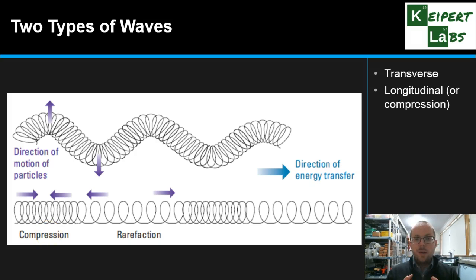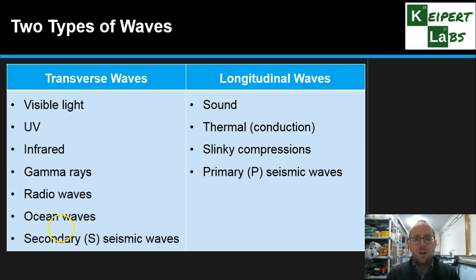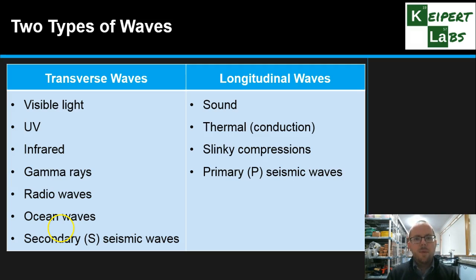Different types of energy travel as one of these two types of waves. Transverse waves include all electromagnetic waves — visible light, UV, infrared, gamma rays, and radio waves. They are all closely related, as we'll see in a future video. Ocean waves also travel in a transverse pattern, which is why we get ripples going up and down. Secondary or S seismic waves from earthquakes are also transverse waves — they make the ground move up and down.